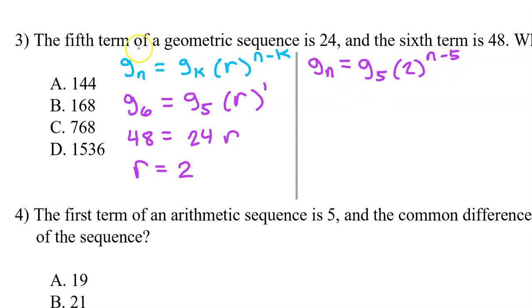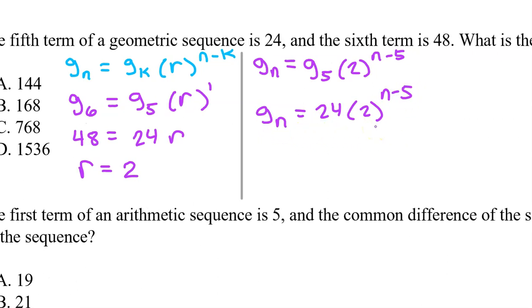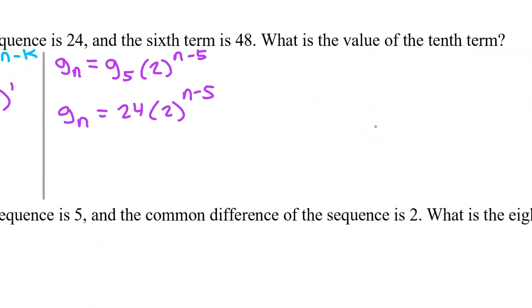Again, the fifth term is 24, so the full rule for g_n will be 24 times 2 to the n minus 5 power. I can use this rule to find whatever they ask me for next, which is the value of the tenth term.